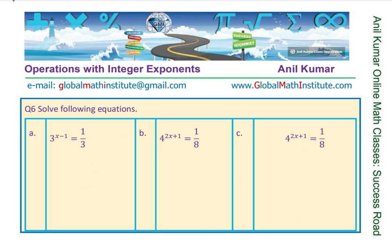Now here are equations to be solved. We have 3 to the power of x minus 1 equals 1 over 3. Now 1 over 3 can be written as 3 to the power of minus 1. When we have the same base, the exponents are equal, so x minus 1 equals minus 1. Solving, x equals minus 1 plus 1, giving x equals 0. You can substitute 0 and verify it becomes 3 to the power of minus 1, which is 1 over 3.